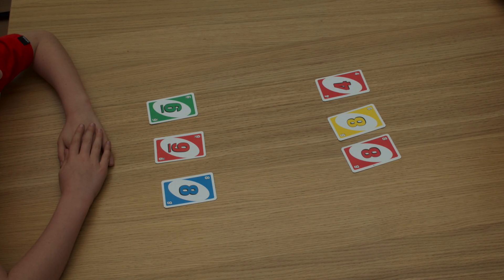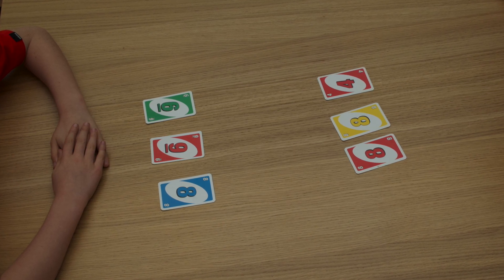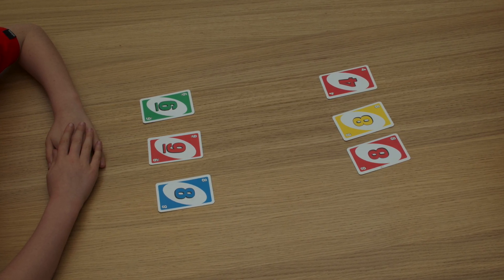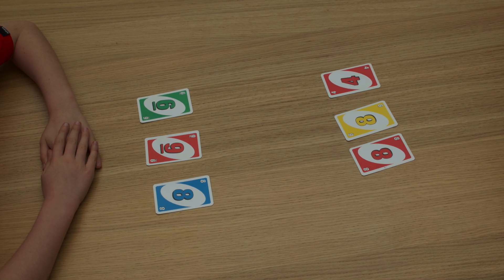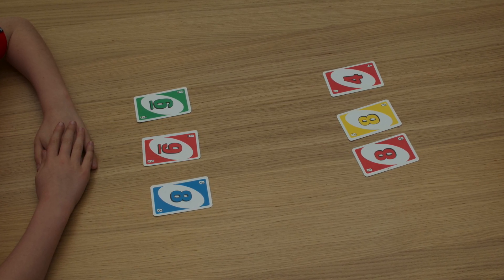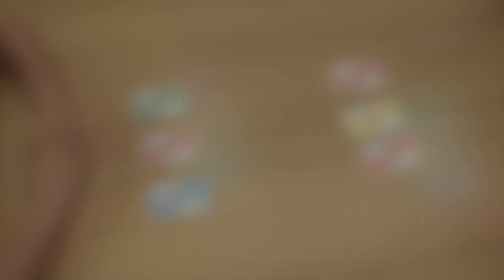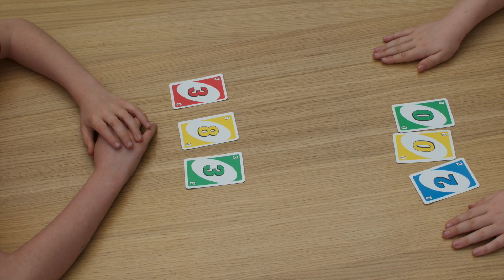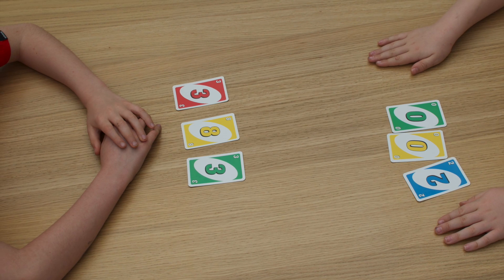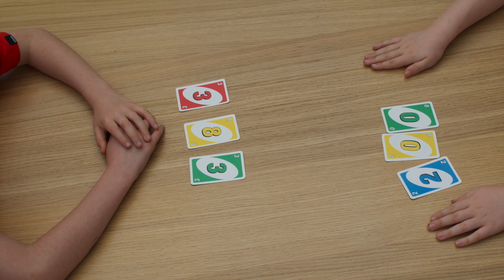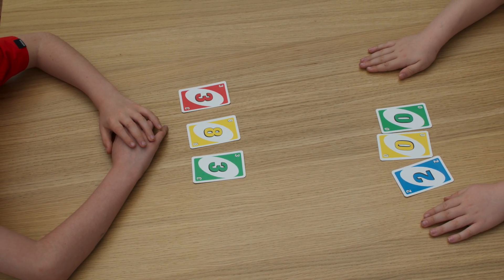So first up, Rocco drew three cards to make 698. Rex drew three cards to make 884. Yes, I won! Rex got to keep the cards. Next up, Rex made 200 with his cards, and Rocco made 383. I won this time!